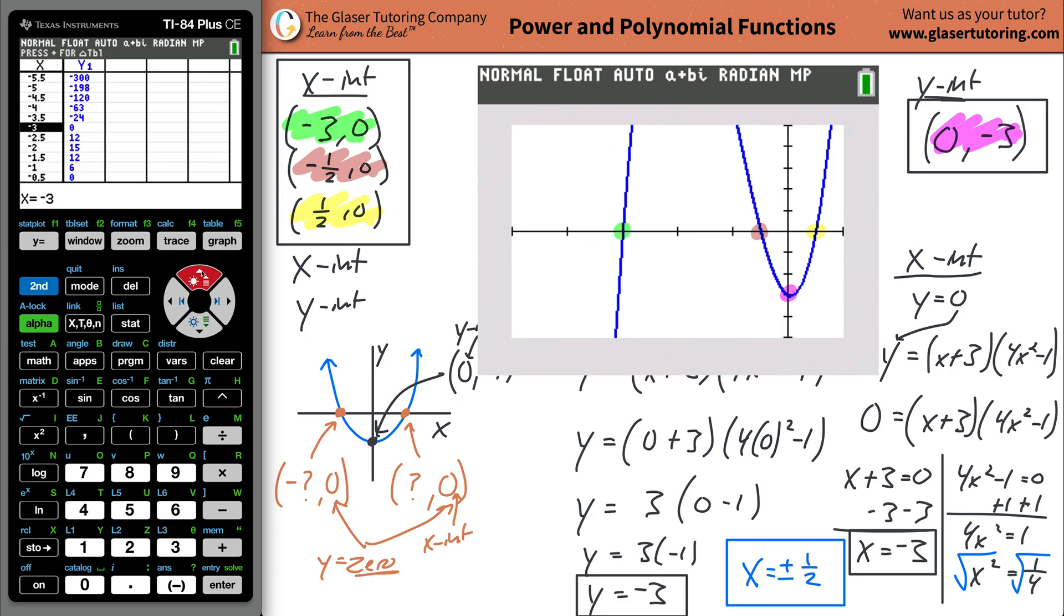Go to negative three for your x. When x is negative three, what should y be? Zero. That's what we said over here. When x is going to be negative 1/2, boom, what's y? Zero. That's what we said.